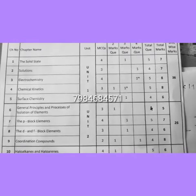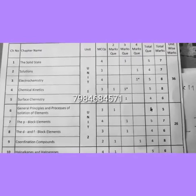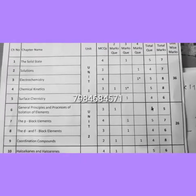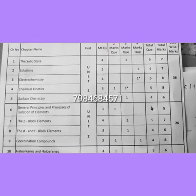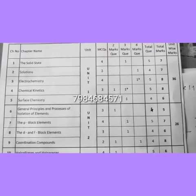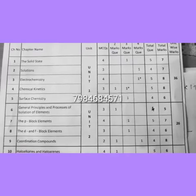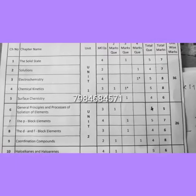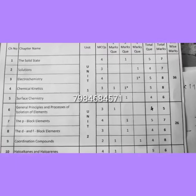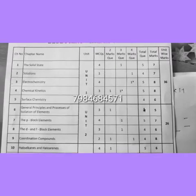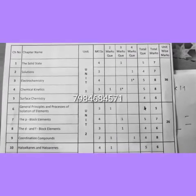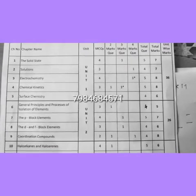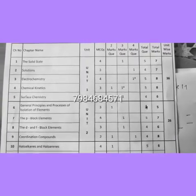P-block Elements: 4 MCQs and 1 three-mark question, making 5 total questions with a weightage of 7 marks. D and F block Elements — a very important chapter — has 3 MCQs and 1 three-mark question, totaling 4 questions worth 6 marks; these two chapters together contain 13 marks. Coordination Compounds has 2 MCQs, 1 two-mark question, and 1 four-mark question, giving 8 marks in total.